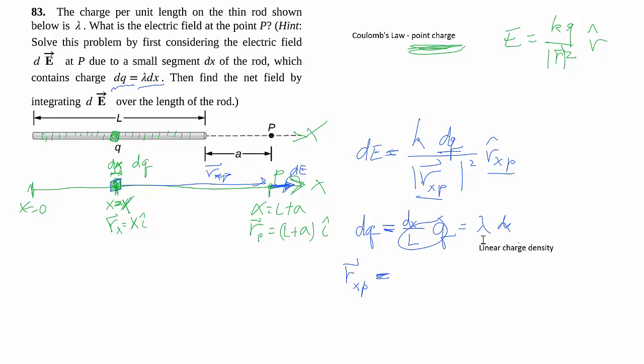Then the last piece is, of course, like always, we need to figure out the displacement vector between our source and our point, which is r_P minus r_x.